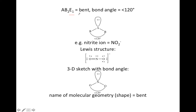Next example, AB2E1. Now we're doing examples that have lone pairs. This one has two atoms bonded to the center and one lone pair, and it turns out it's going to be bent with a bond angle of less than 120 degrees. With two bonds and one lone pair, you keep them about 120 degrees apart to minimize electron repulsion. However, the lone pair has a slightly larger repulsive effect than the bonding pairs, so that's going to shrink the bond angle a little to less than 120 degrees. This happens every time there are lone pairs.